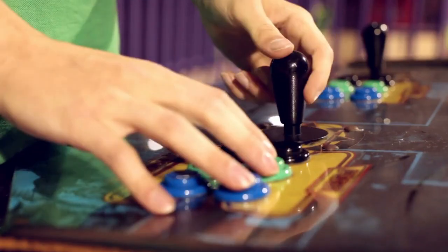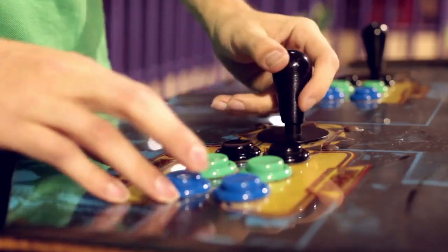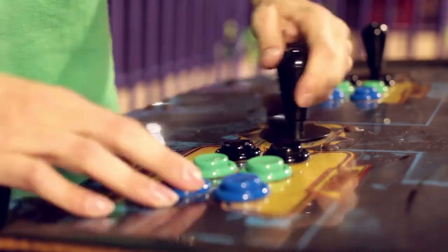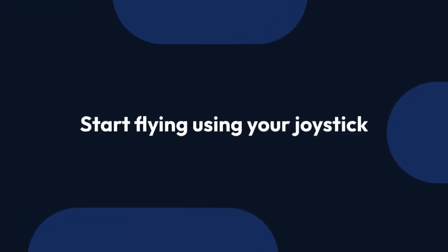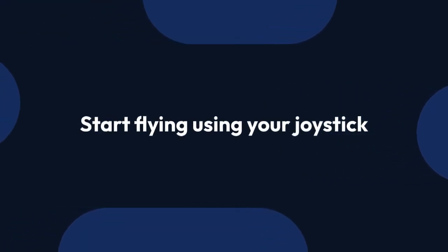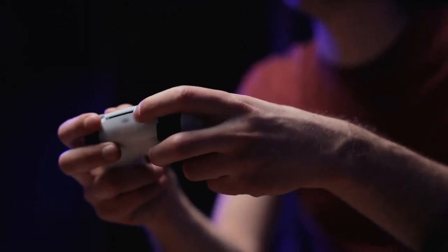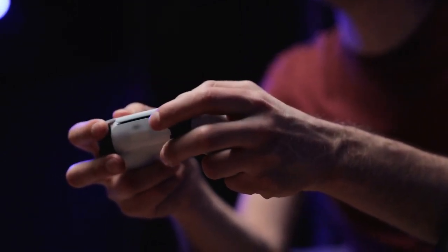Step 11: Once you've assigned all the buttons, go back to the Settings menu and select Save or Apply to save your changes. Step 12: Now you can go back to the main menu and start flying using your joystick. You may need to experiment with the controls to find what works best for you.